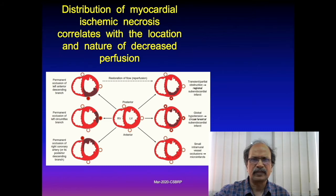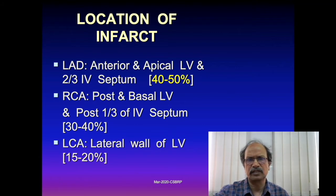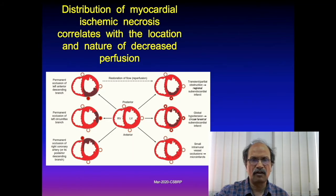If the right coronary artery is involved, the posterior and basal left ventricle and the posterior one-third of the interventricular septum are affected. The lower left diagram shows the posterior wall involved including the apex and the posterior one-third of the interventricular septum.